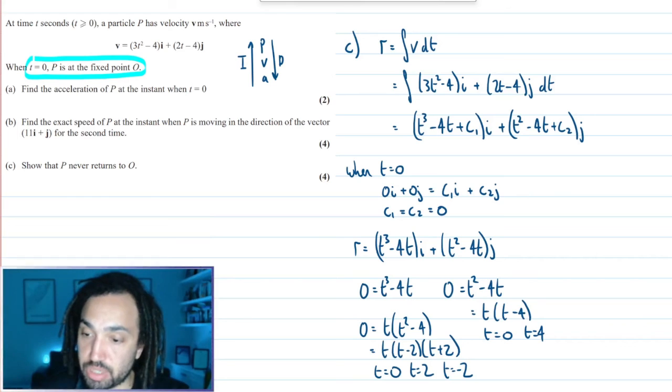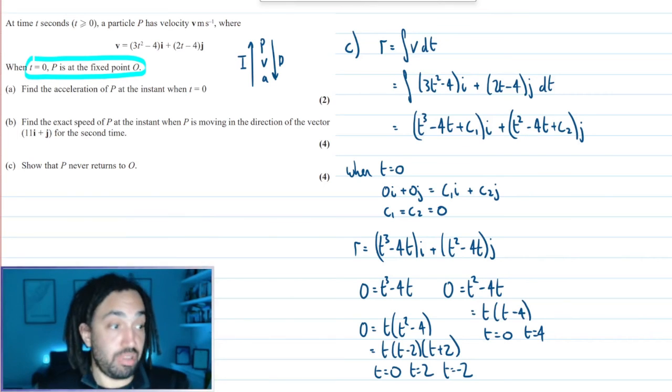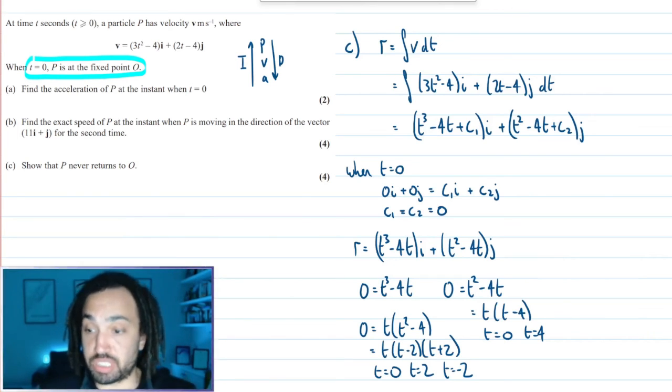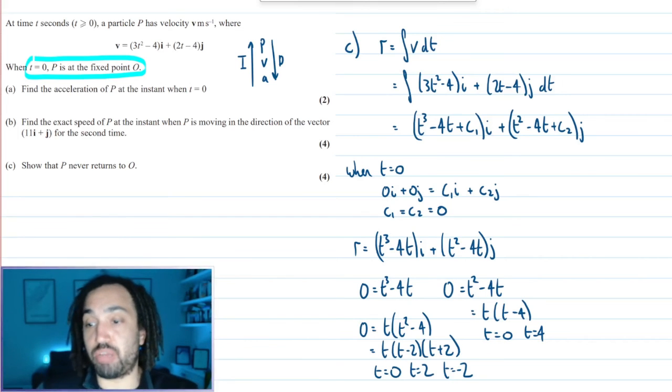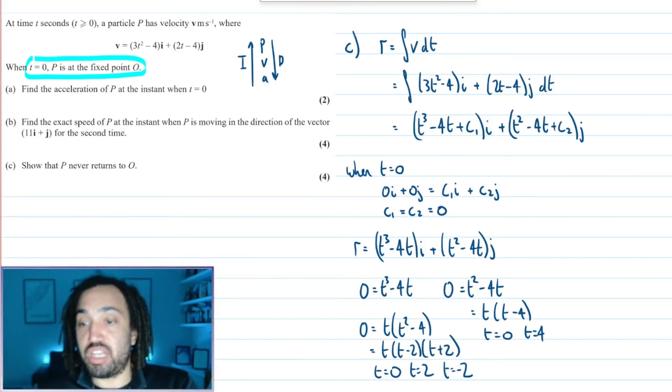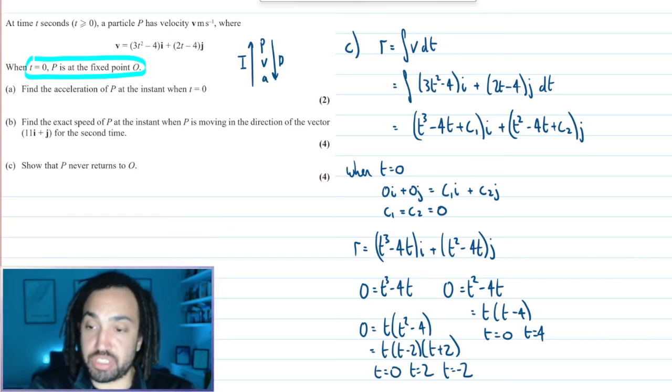So we have it here that it will never return to the origin because there is not a time where it is both 0 i position and 0 j position.